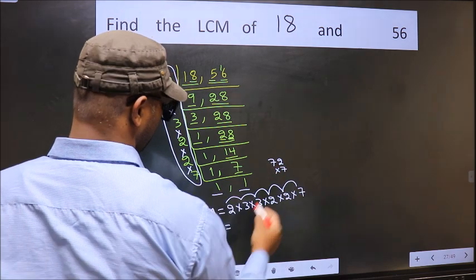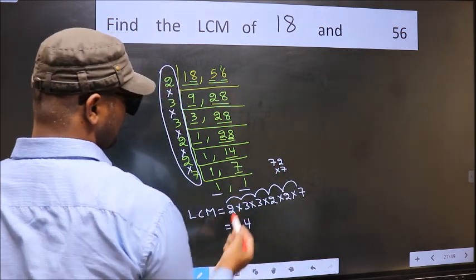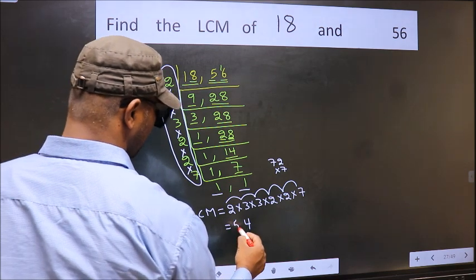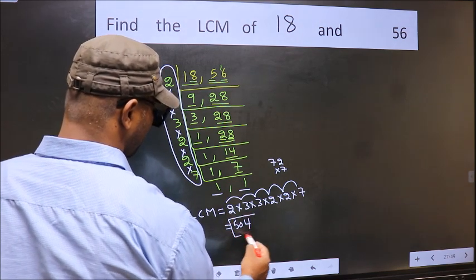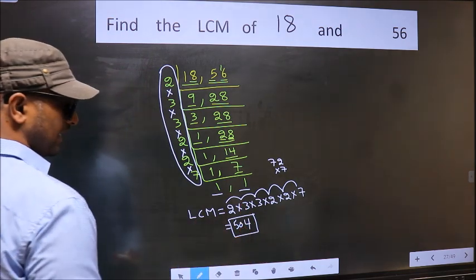7 times 2 is 14, 4 is 1, 7 sevens 49 plus 1, 50. So 504 is our LCM.